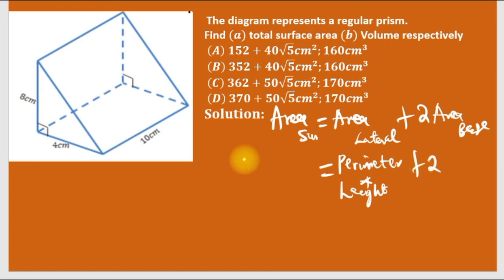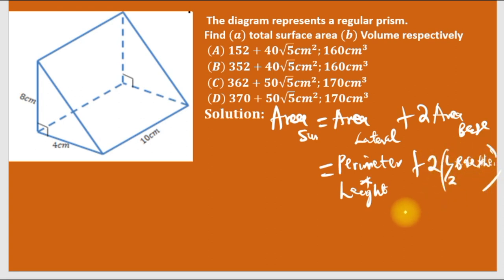Plus two times the area of the base, which is half base times height, since the base is a triangle. The perimeter of the base — we have 8 and 4 given as lengths, but we need to find the hypotenuse. To get it, we use the Pythagorean theorem.